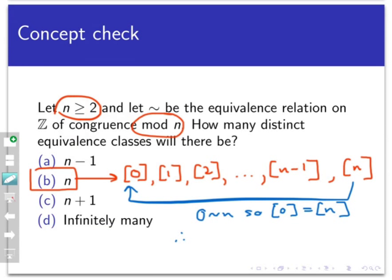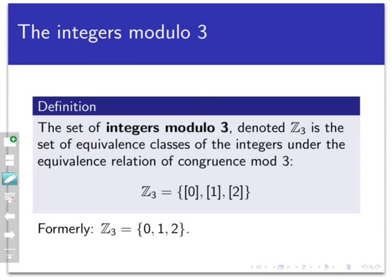So going back to congruence mod 3 again, we only have three distinct equivalence classes, the class of 0, the class of 1, and the class of 2. Any other class will be equal to one of these. So let's define the set z mod 3 to be the set containing these three equivalence classes. The set of equivalence classes mod 3 is referred to as the integers modulo 3. And again, this is just the set of equivalence classes that's formed by the relation of congruence mod 3. Earlier in the course, we used the same notation to represent the set just consisting of the integers 0, 1, and 2. And we're modifying that notation now to refer not to integers, but to equivalence classes instead.